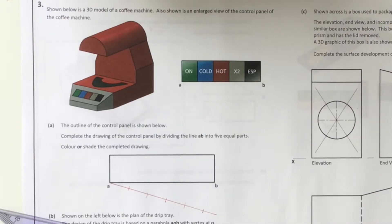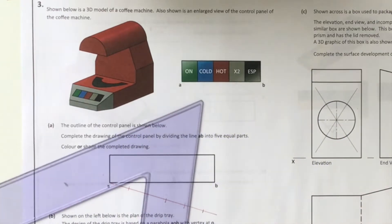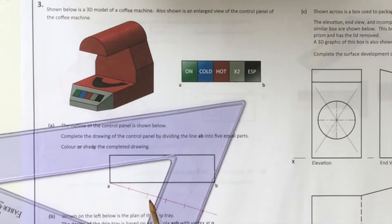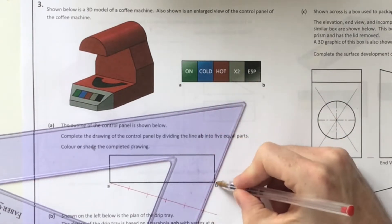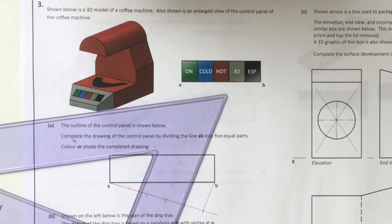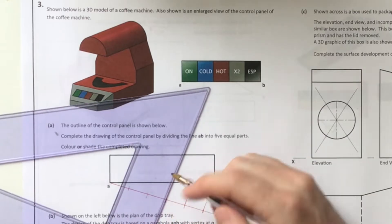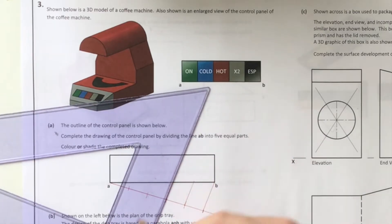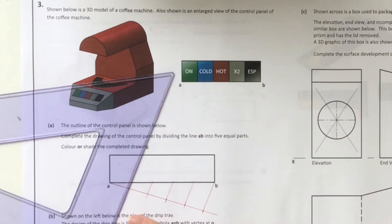There's 5 equal divisions. Then I'm just drawing the last one to B and going parallel from there using my sliding set squares. That will divide the line AB into 5 equal parts.